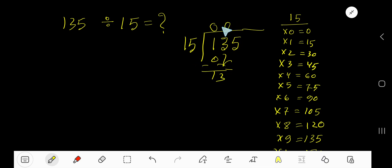15 goes into 13, how many times? 0 times as 13 is less than 15. 0 times 15, 0. Subtract 13. Bring down this digit, 135.